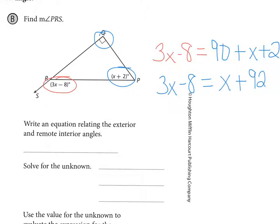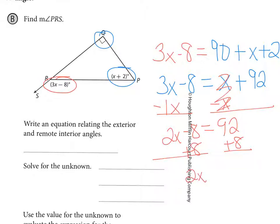I'm going to subtract 1x from both sides, which gives me 2x minus 8 equals 92. I'm going to add 8 to both sides, which gives me 2x equals 100, and divide both sides by 2, x equals 50.